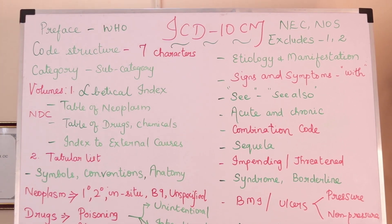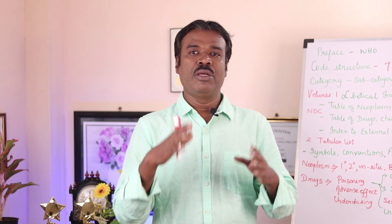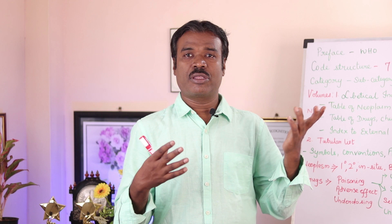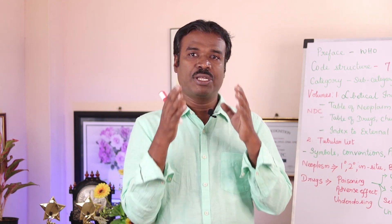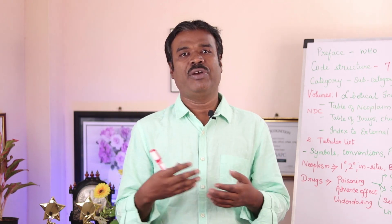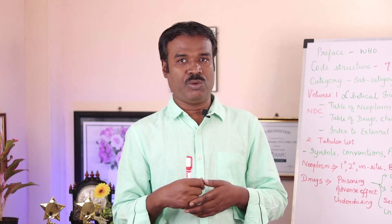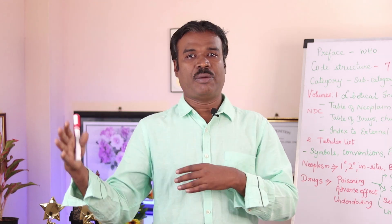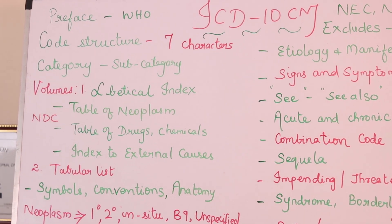From characters four to seven, it can be either numbers or alphabets. The first three characters we call the category. For instance, I10, which is the code for hypertension — just these three characters qualify as a valid ICD-10-CM code. Anything after this category we call a subcategory.